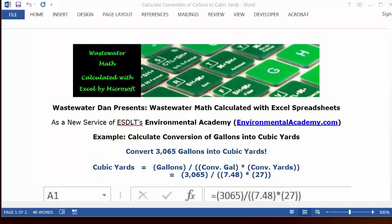Today's example: calculate conversion of gallons into cubic yards. Today's problem reads, convert 3,065 gallons into cubic yards.